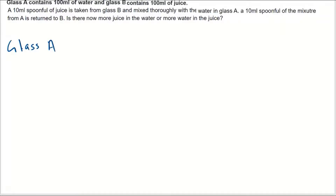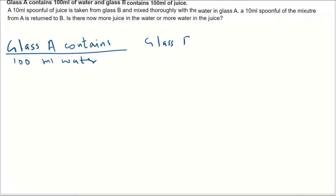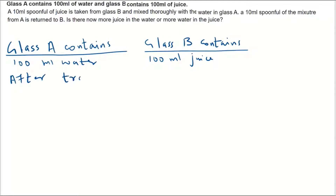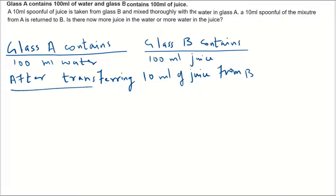Glass A contains 100 ml of water and glass B contains 100 ml of juice. First, we'll transfer 10 ml of juice from B to A as per the question. After transferring 10 ml of juice from B, what will happen? In glass A we already have 100 ml of water.